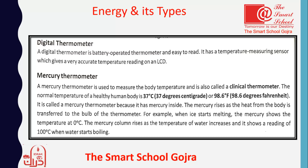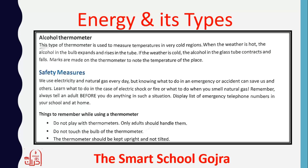Or iska jo temperature hai, 100 degree Celsius show hota hai jab paani jo hai boil hona shuru ho jata hai. Is tarah se mercury thermometer, uske andar mercury hota hai, jo hum ari help karta hai temperature ko measure karne mein. Next one is alcohol thermometer. This type of thermometer is used to measure temperature in very cold regions — jo bohut zyada bhaita thande ilaqe hote hain, wahan par alcohol thermometer ka istemal kiya jata hai.